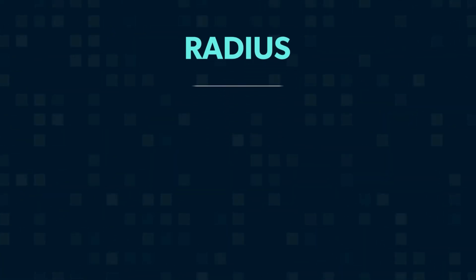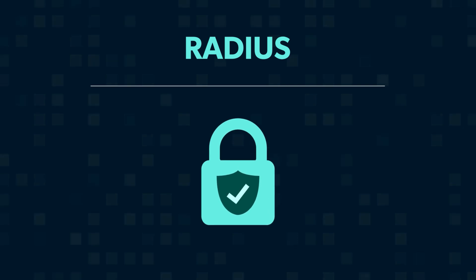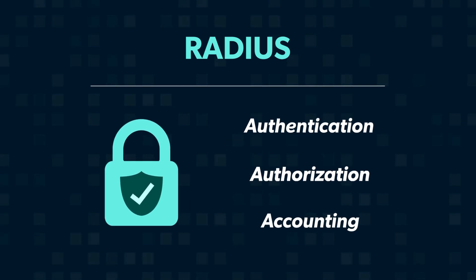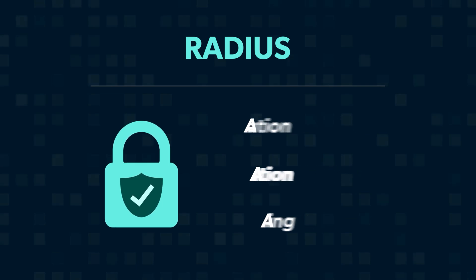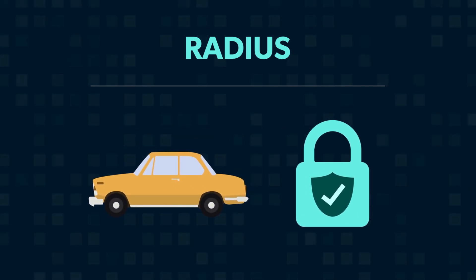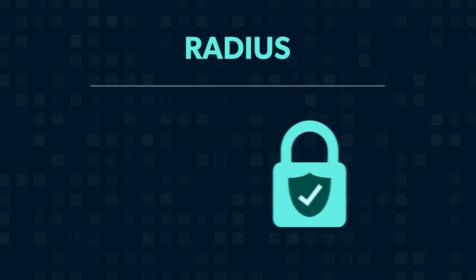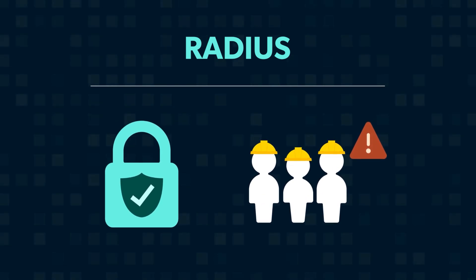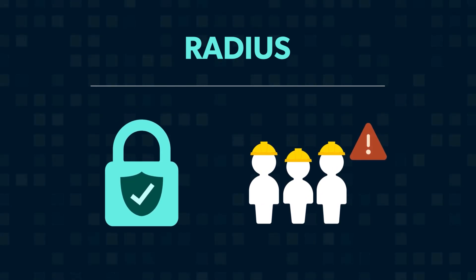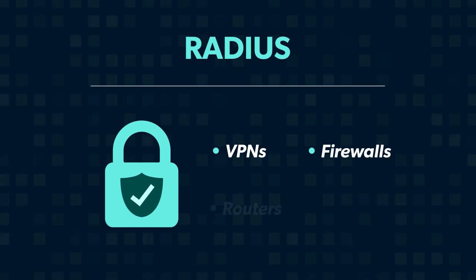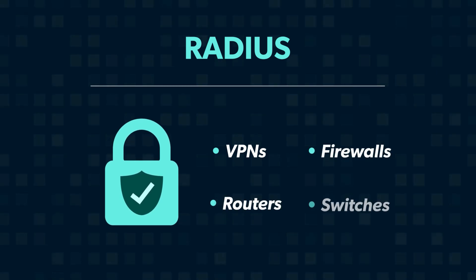RADIUS is a mature access control protocol that provides authentication, authorization, and accounting, otherwise known as AAA. No, your car doesn't have a problem, but your remote workforce might if RADIUS didn't exist to log into network resources such as VPNs, firewalls, routers, and switches.